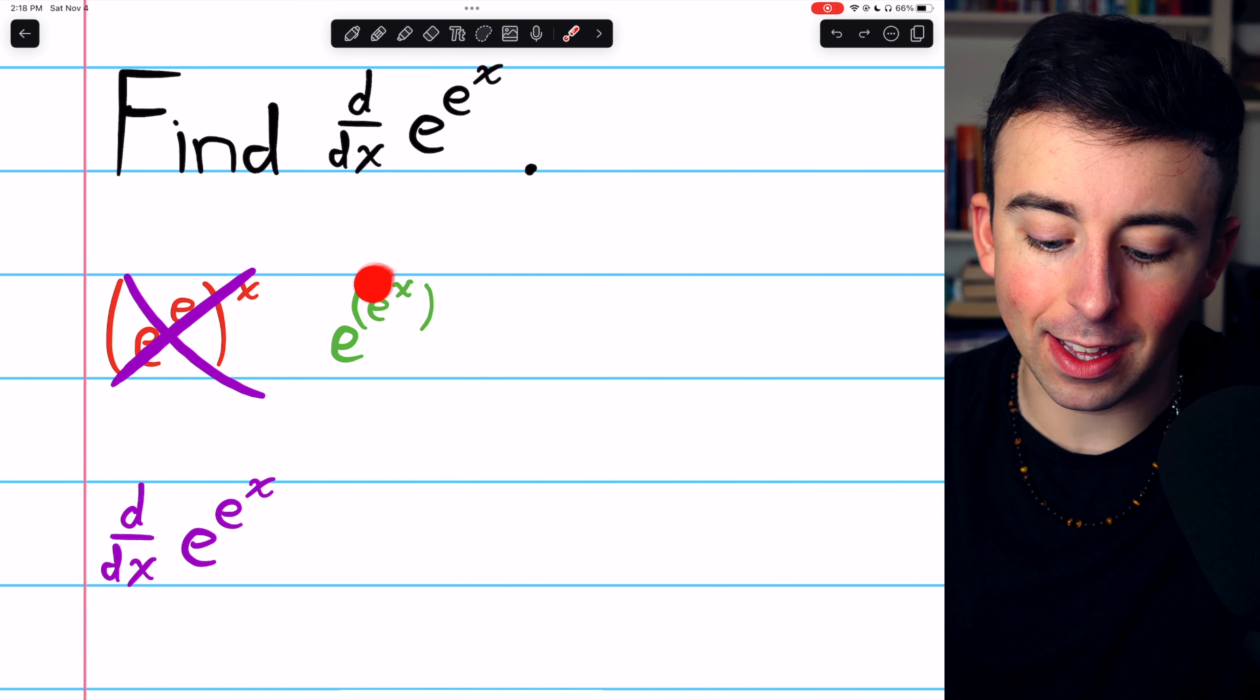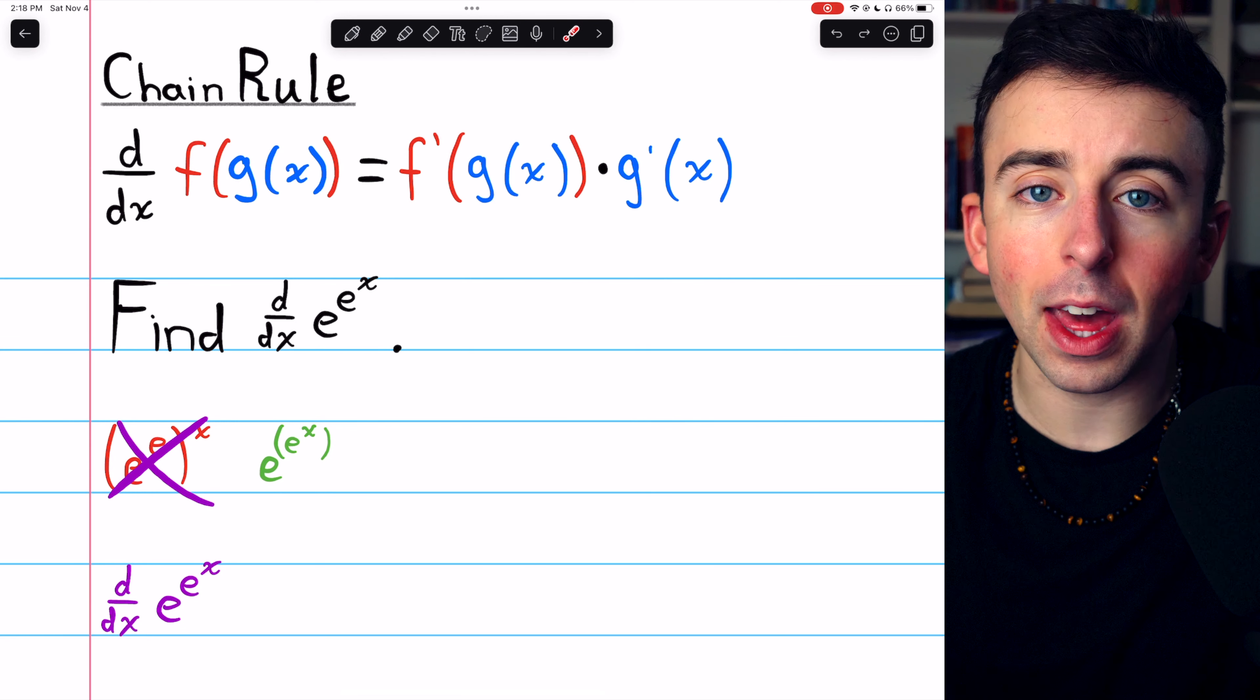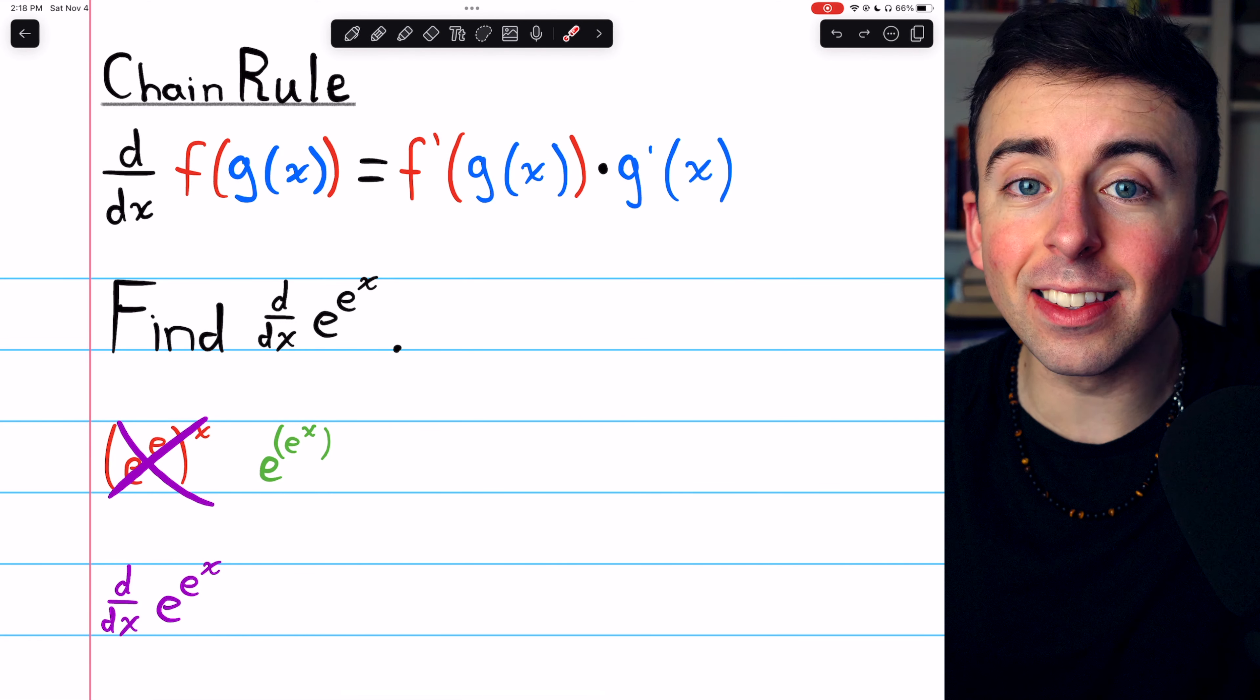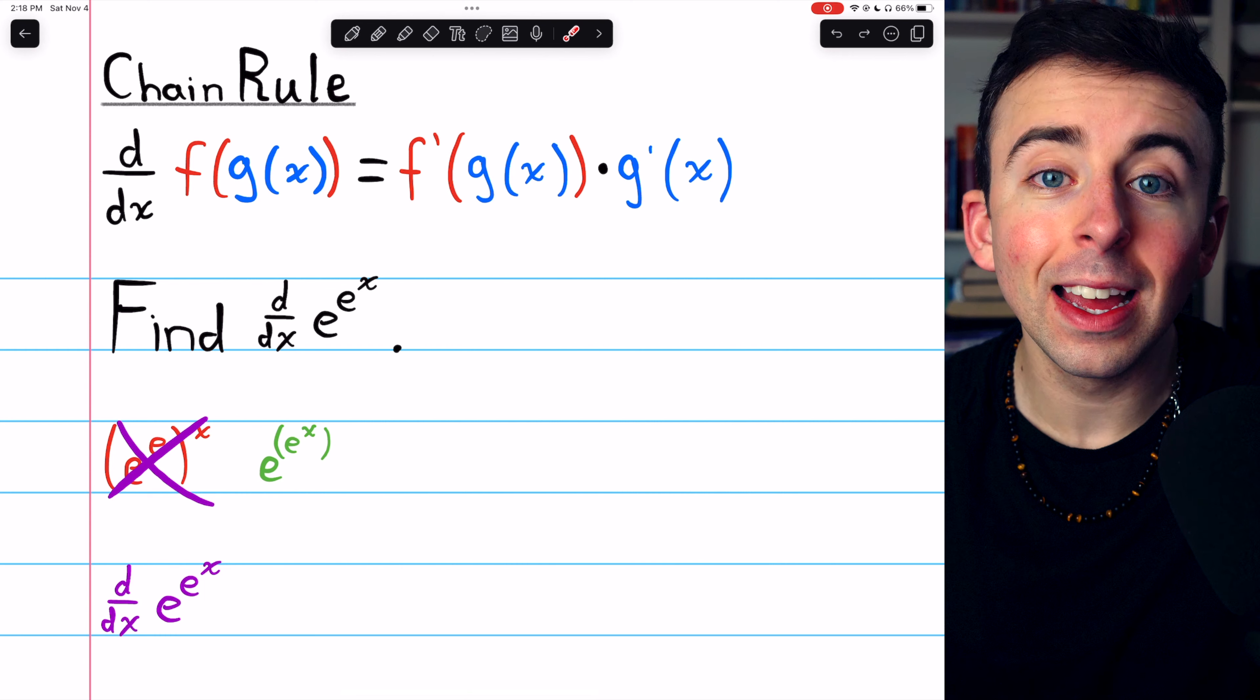So to take the derivative, we're going to need the chain rule, which I've provided here. The chain rule begins with f prime of g of x. That's the derivative of the outside function, leaving the inside function unchanged.